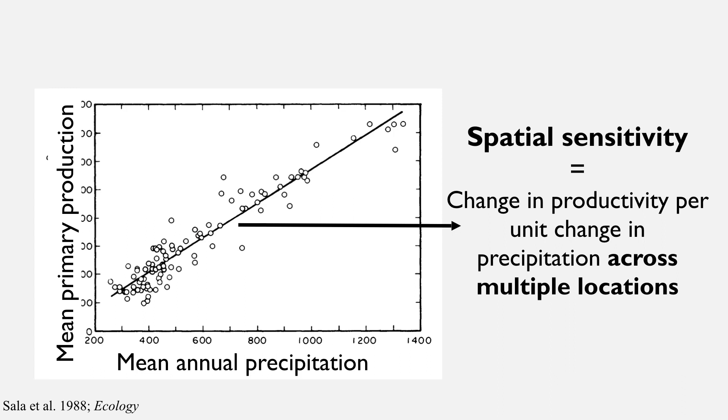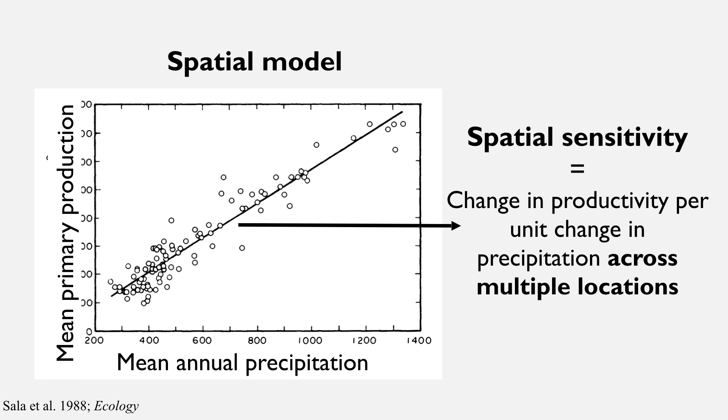From the slope of that relationship — the rise over run from a linear model — we can predict the spatial sensitivity of primary production in these regions, which simply says the change in productivity per unit change in precipitation across space. Each one of those points could reflect anywhere from 10 to 20 data points, reflecting mean changes in productivity arising from mean changes in precipitation across space. That's in part why this spatial model is so predictive and so linear. We call this the spatial model, and it's one of the models we utilize to predict how ecosystems may respond to future changes in precipitation expected with climate change.